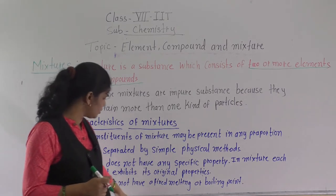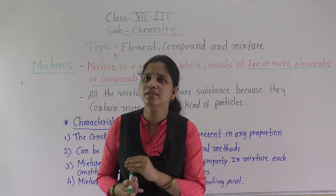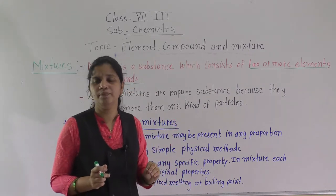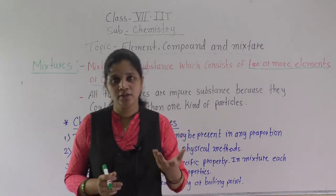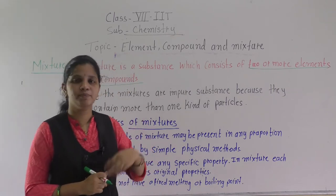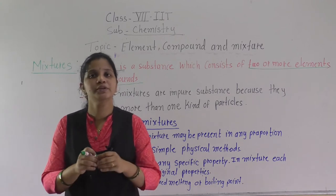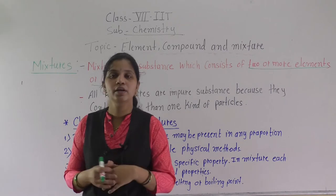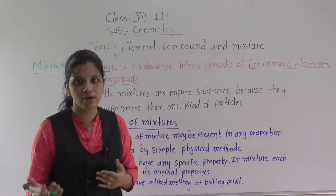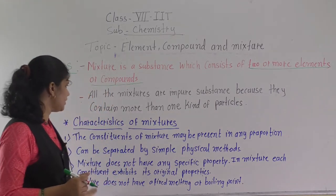The next point is that mixtures do not have a fixed melting or boiling point. When any substance starts melting at a particular temperature, that point is known as its melting point. Every constituent present in a mixture shows its own different melting point and boiling point. For example, water boils at 100 degrees Celsius — everyone shows a different melting point and boiling point.